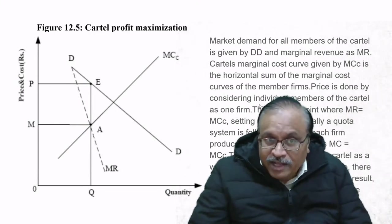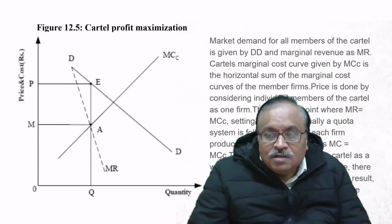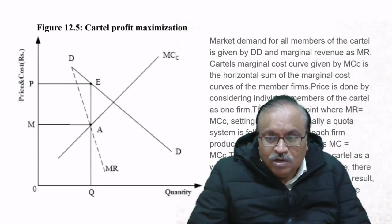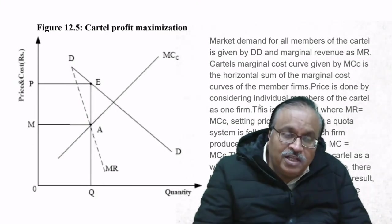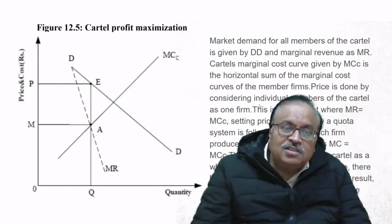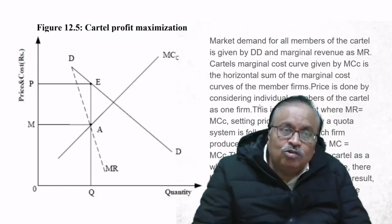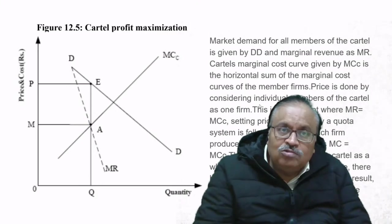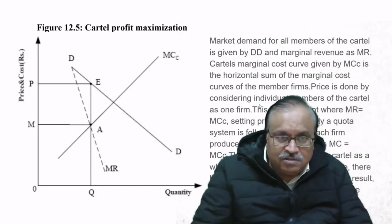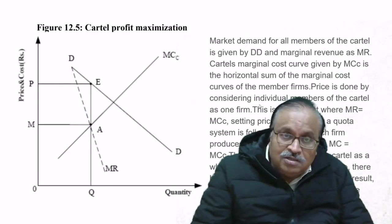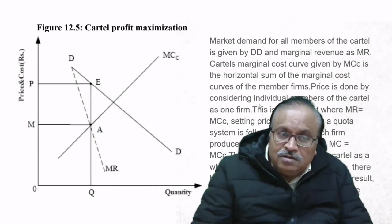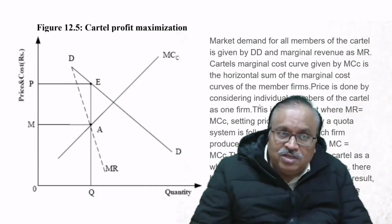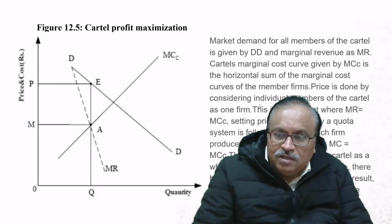What actually happens is that joint profit maximization works well, but individual countries, the moment they need money, exceed their quota. By exceeding the supply, cartel profit maximization is undermined. It is only as long as all members work in tandem and adhere to their quota that they can command very good profits. This is known as a joint profit maximizing outcome.